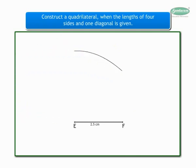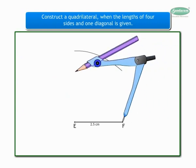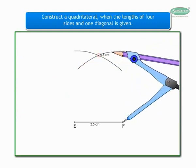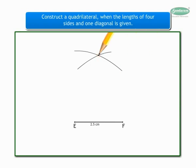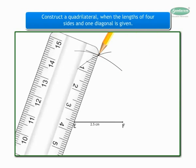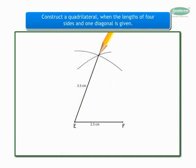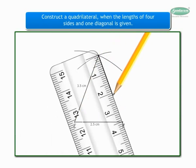Similarly, with the same measurement, we shall draw another arc intersecting the previous arc from point F on the left-hand side. Name the point of intersection of the two arcs as D, and join the point of intersection to point E and point F.